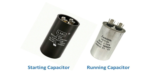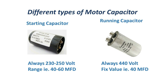Normally we use starting capacitors and running capacitors with induction motors. The value of a capacitor is measured in microfarad, picofarad, and nanofarad. Starting capacitors have values in ranges like 30-40, 40-60, 60-80, 80-100 microfarad, and are always rated at 230 to 250 volts AC.